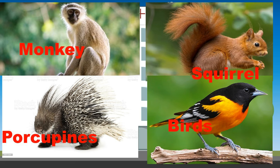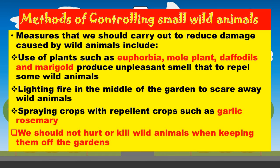Learners, how can we control them? What are some of the methods of controlling the small wild animals? Measures that should be carried out to reduce the damage caused by wild animals include use of plants such as euphorbias, marigolds, and other plants that produce an unpleasant smell that repels some wild animals.